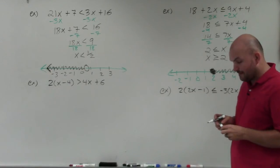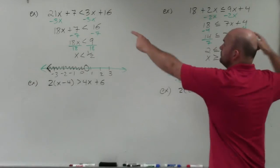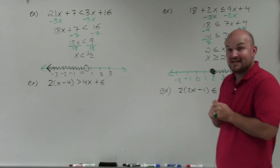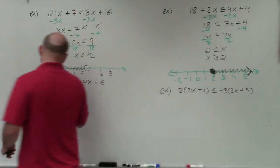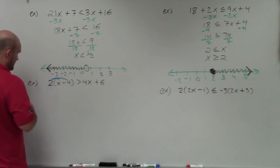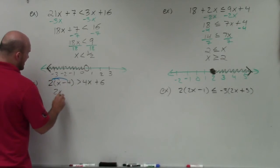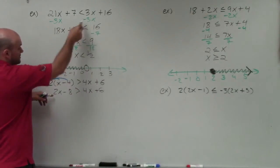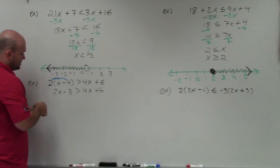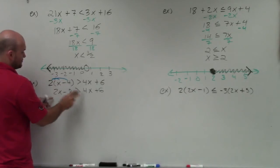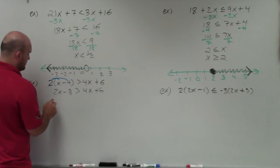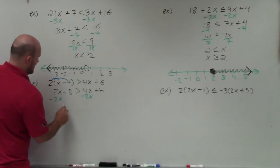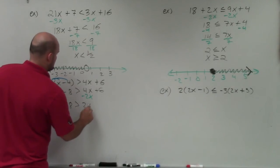Now we have what I call a multi-step equation with parentheses. In these first two examples, both sides were already simplified — we just needed to get the variable to the same side. In this example, my left side is not simplified. So the first thing I want to do is apply the distributive property to simplify it. When I apply the distributive property, I get 2x minus 8 is greater than 4x plus 6. Now it looks like the previous problems — I need to get my variable to the same side. If I subtract 4x I'll have a negative 2, so I'm going to want the variable on the left side — I'll subtract 2x.